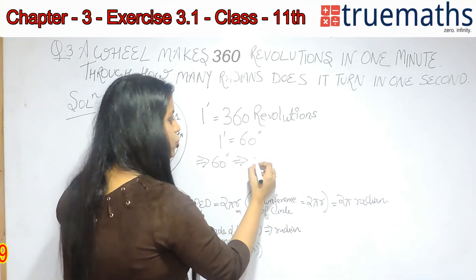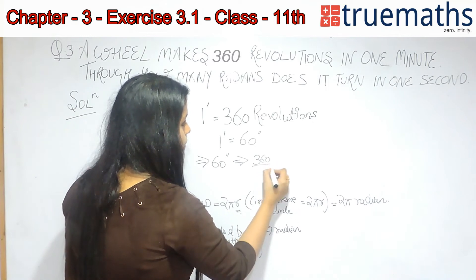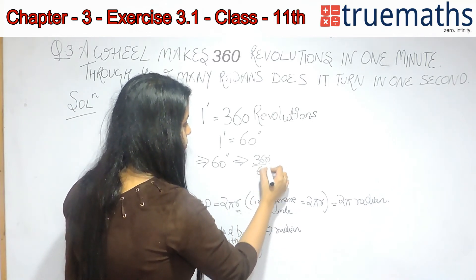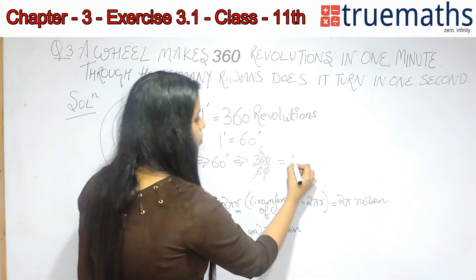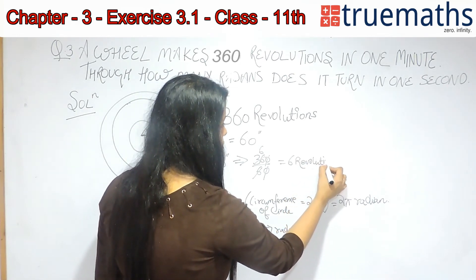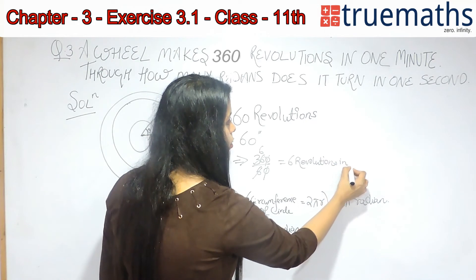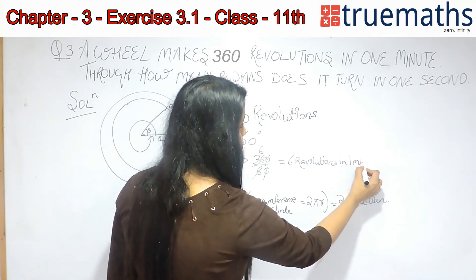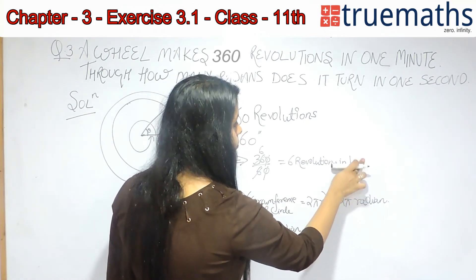I can say that if the wheel is turning 360 revolutions in 1 minute, then in 60 seconds it will turn 360 by 60, that is 6 revolutions. Sorry, in 1 second.